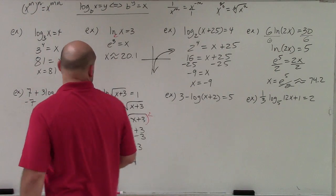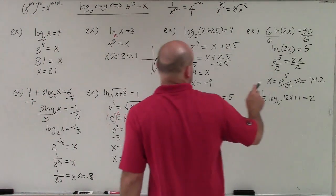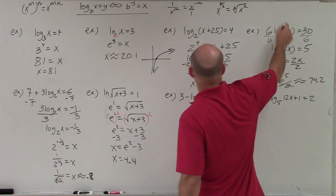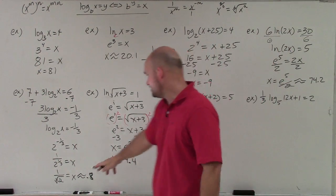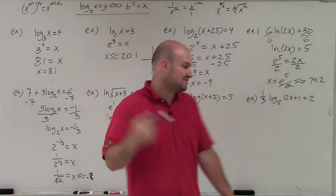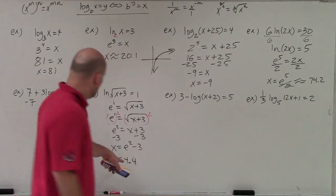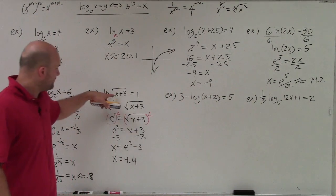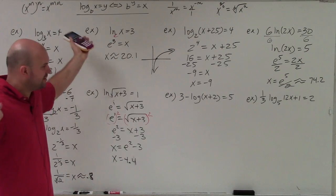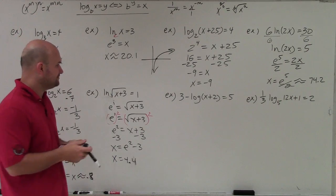Let me double-check: when I plug 74 in, that gives me a positive value. When I plug 0.8 in for x, that's positive. When I plug 4.4 in, 4.4 plus 3 under the square root is still positive.